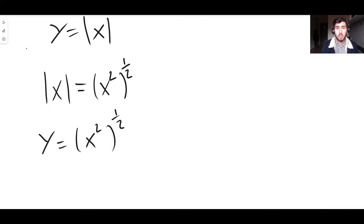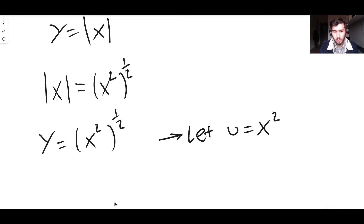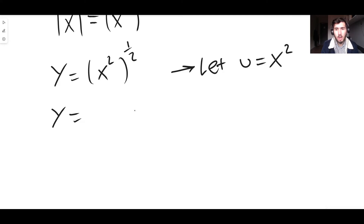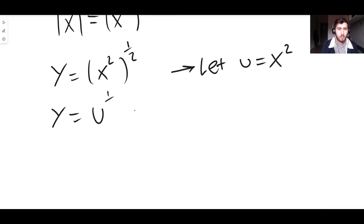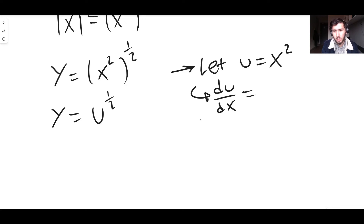We make a u-substitution. This is the chain rule from differentiation. Let u = x². Then y equals u to the power of one half. Now we find du/dx: differentiating u = x² with respect to x gives du/dx = 2x.